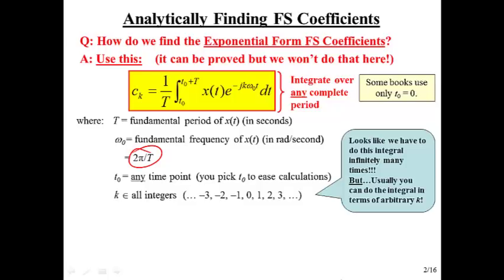k goes over all the integers. Now, it looks like you have to do this formula for every value of k, an infinite number of integrals. But we can actually often do it arbitrarily in terms of an arbitrary k, and then we get a nice closed form result. Then you just say c sub k is equal to some function of k. Plug in your k values as needed.